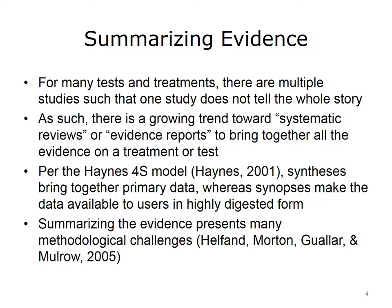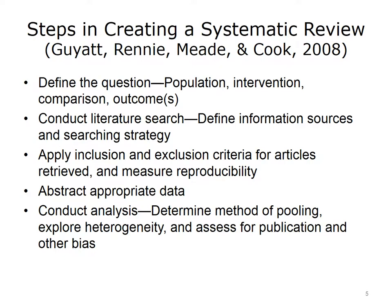Summarizing the evidence doesn't mean simply collecting a few studies and combining their findings. There are methodologic challenges in summarizing the evidence, recently elucidated in a supplement to the journal Annals of Internal Medicine, emphasizing that methodology is required to do summarizations of evidence. If we're going to create a systematic review, what are the steps? Guyatt, in a textbook on evidence-based medicine, describes the steps in creating a systematic review. First, we have to define the clinical question as it pertains to the population, intervention, comparison where appropriate, and outcome. We then conduct a literature search, defining the information sources we're going to use and coming up with a search strategy. In a systematic review, a literature search isn't done just by typing a few terms into MEDLINE. We have to conduct a comprehensive search of the literature and cast a broad net to ensure that we retrieve a sufficient number of articles to evaluate.